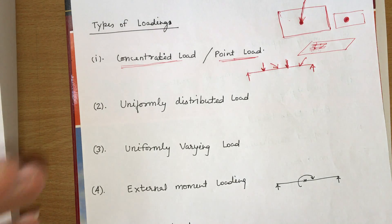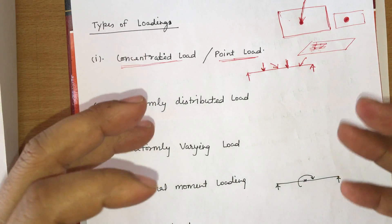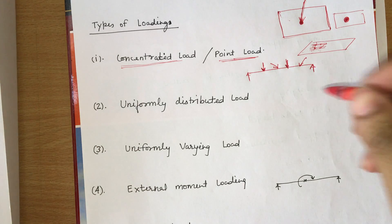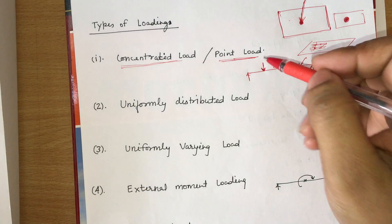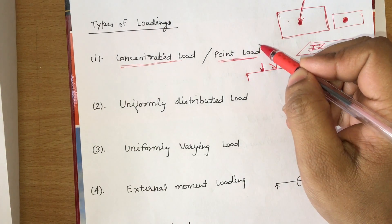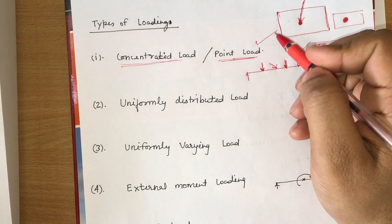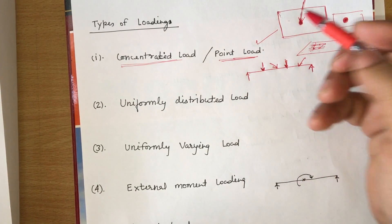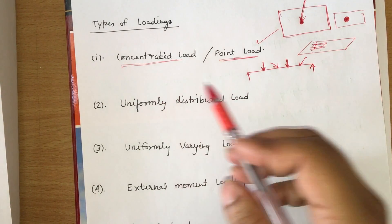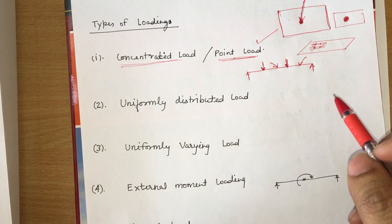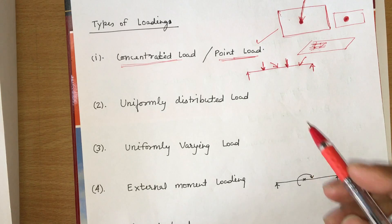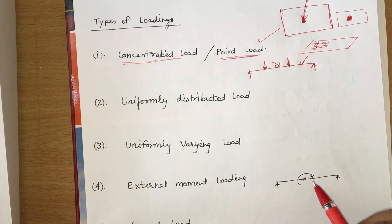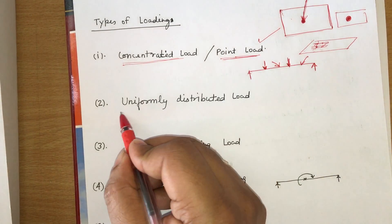Generally, a concentrated load will be a column, which is a concentrated mass — a point load, which has a punching effect. That is the nature of concentrated load. In your questions, it will be labeled as point loads, and from the diagram you will be able to identify the type of loading.